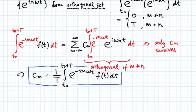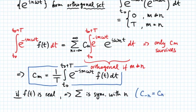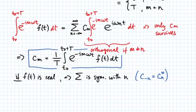Additional thing to know that if function f of t is real, then the sum of Fourier series will be symmetric with respect to n. In other words, C with a subscript of minus n will be simply C sub n complex conjugate.